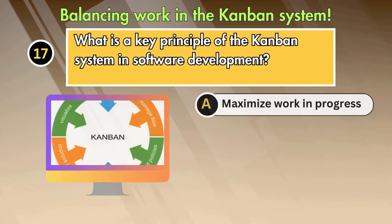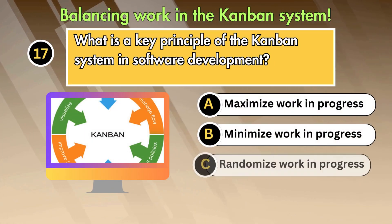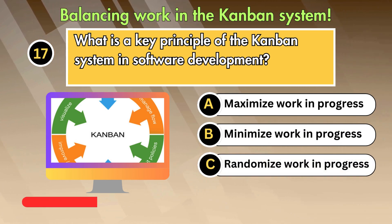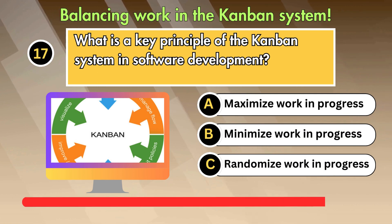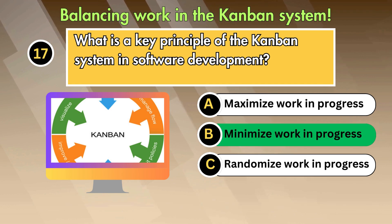What is a key principle of the Kanban system in software development? Option 1: Minimize work in progress. Option 2: Maximize work in progress. Option 3: Randomize work in progress. Answer is Minimize work in progress.